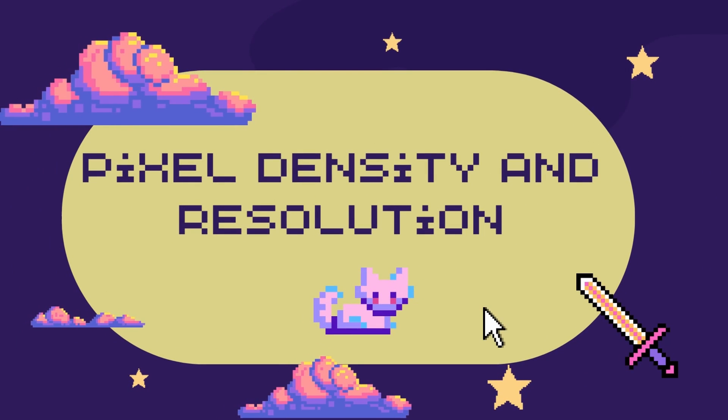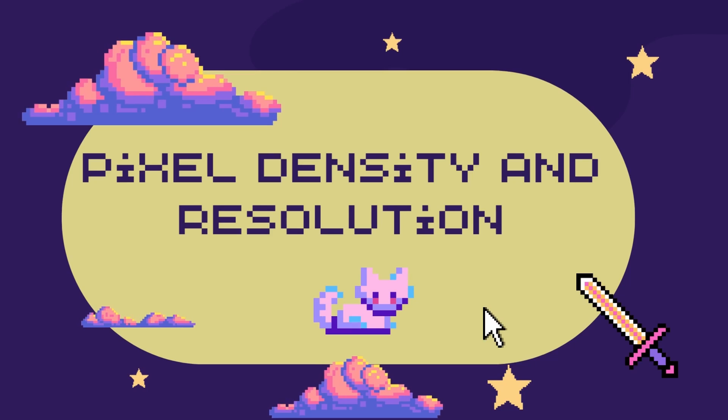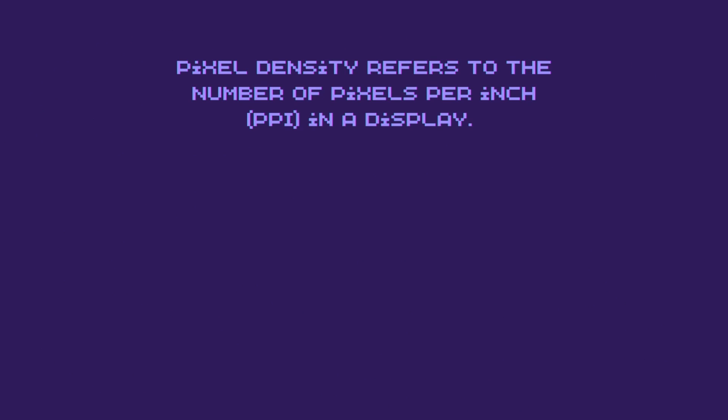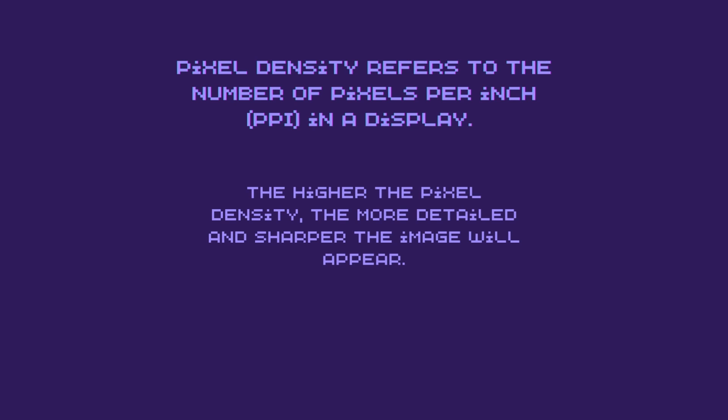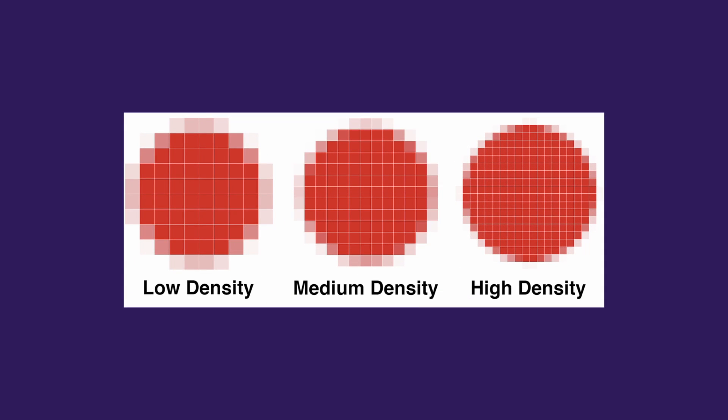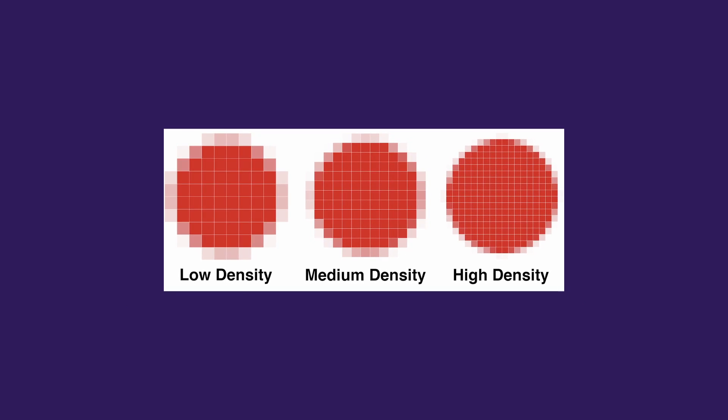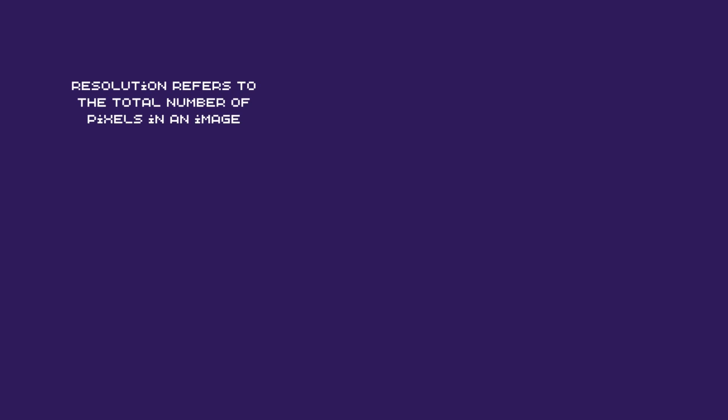Pixel density and resolution are both important factors to consider when working with pixels. Pixel density refers to the number of pixels per inch, or PPI, in a display. The higher the pixel density, the more detailed and sharper the image will appear, because a higher pixel density means there are more pixels in a smaller space.